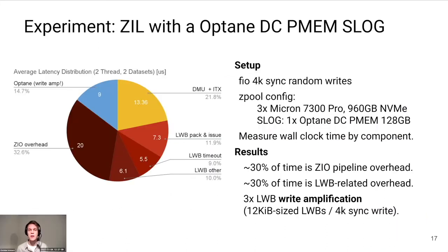We can observe this by configuring Optane PMEM as a slog device with today's ZIL. In that experiment, we used FIO to generate 4K synchronous random writes onto a Zpool with separate datasets for each FIO thread. The pool had three enterprise NVMe drives as top-level VDEVs providing plenty of IO throughput, and a single PMEM DIMM configured as a slog device. What we measured was the wall clock time spent in each latency component, and the vast majority goes to LWB and ZIO overheads — only about 20% goes to DMU and ITX work.